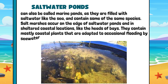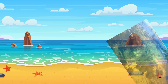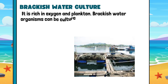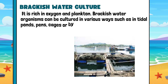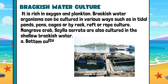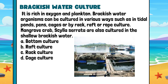Salt marshes occur on the edge of saltwater ponds and in sheltered coastal locations like the heads of bays. They contain mostly coastal plants that are adapted to occasional flooding by seawater. Brackish water culture is rich in oxygen and plankton. Brackish water organisms can be cultured in various ways such as in tidal ponds, pens, cages, or by rack, raft, or rope culture. Mangrove crab and mud crab are also cultured in shallow brackish water.